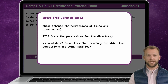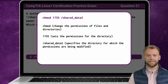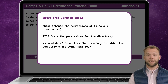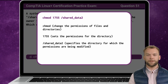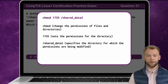Now that we know the answer, let's break it down. The chmod command is used in Linux to change the permissions of files and directories. The numerical mode 1755 represents the permissions for the directory. The leading 1 sets the sticky bit, while the remaining three numbers 755 set the read, write, and execute permissions for the directory owner, group members, and others. /shared_data2 specifies the directory for which the permissions are being modified.